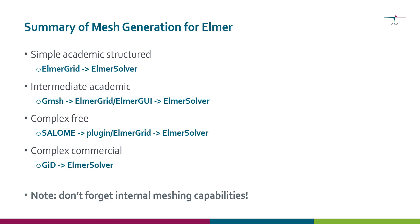Here is a summary of mesh generation recommendations for Elmer. For a simple academic structured mesh, use ElmerGrid. For a more complicated academic unstructured mesh, use Gmesh and export to Elmer format using ElmerGrid. For complex geometries starting from CAD, use Salome — either the plugin or the UNV format — and then import with ElmerGrid. For complex commercial work, you could use GID. And don't forget about the internal meshing capabilities, which may sometimes be very handy.